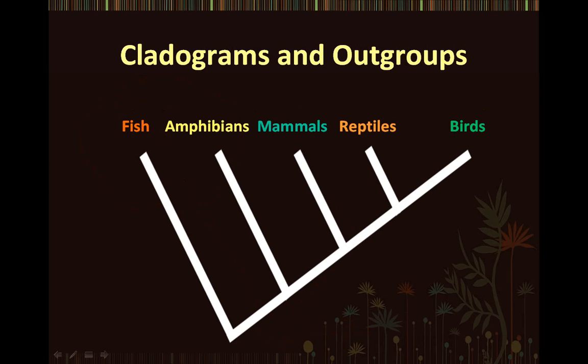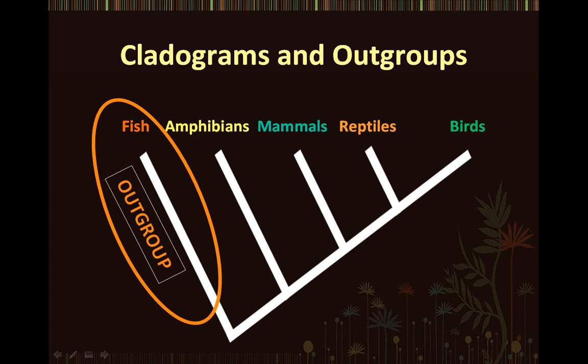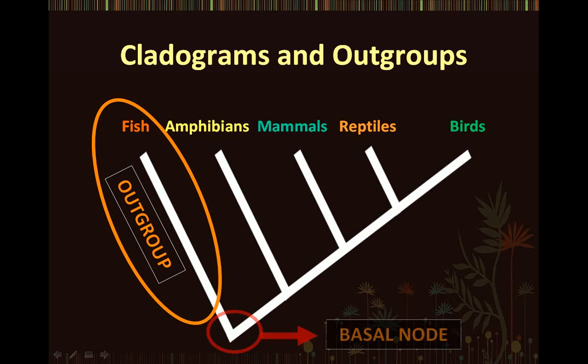Let's further elaborate on the previous cladogram. Can you identify the out-group here? If you said fish, you were right. In this cladogram, fish would be the out-group, because fish was the first taxon to diverge from all the other taxa before they diverged from each other. Then, based on fish as the out-group, we can identify the basal node, which is the lowest node on the phylogenetic tree.